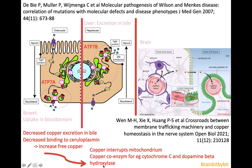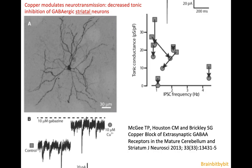This copper interrupts mitochondrial DNA replication, so the mitochondrial membrane disintegrates and there's neuronal death in the striatum. Additionally, a 2013 study showed that copper also modulates neurotransmission, with decreased inhibition of GABAergic neurons in the striatum due to high copper. All these mechanisms explain the symptoms seen in Wilson's disease.